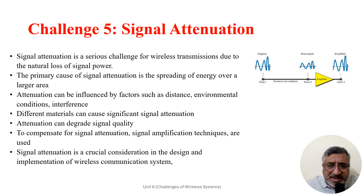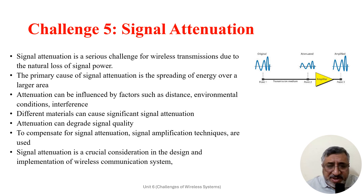Different materials such as walls, buildings, and vegetation can cause significant signal attenuation when the signal passes through or interacts with these materials. Attenuation can degrade signal quality, leading to increased bit error rates, reduced data rates, and decreased signal-to-noise ratio.